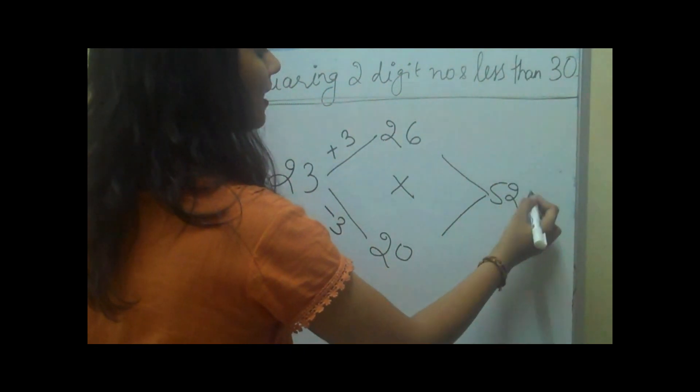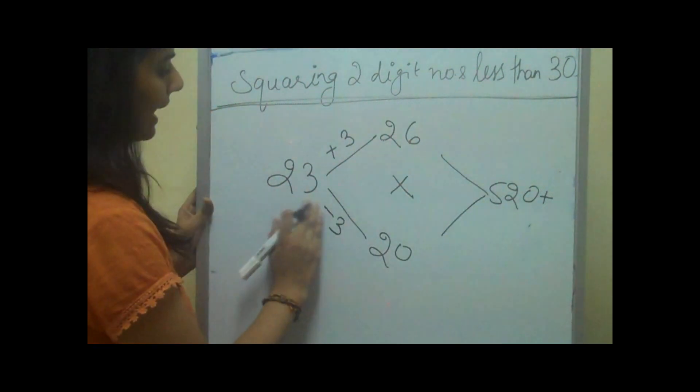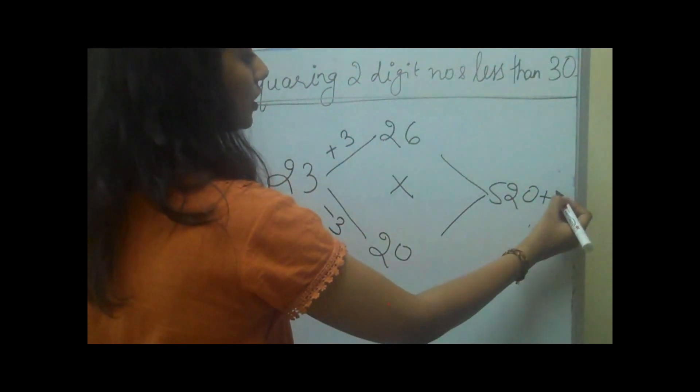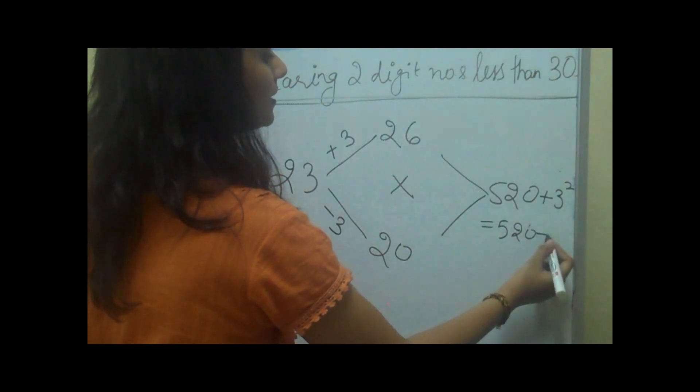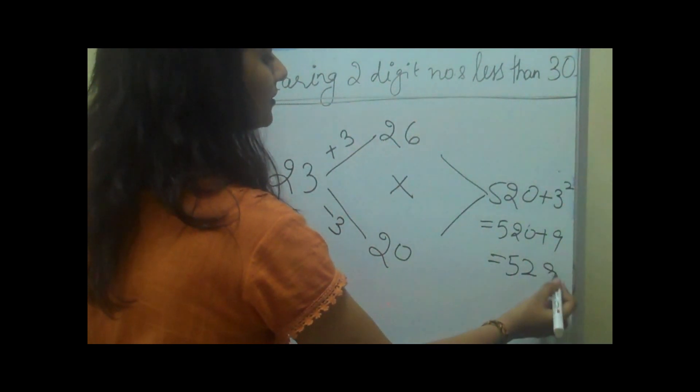This makes 520, and then we'll add the square of the unit digit, which is 3 squared, which makes 520 plus 9 equals 529 as the answer.